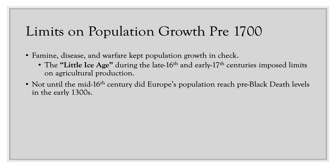Before 1700, natural limits on population growth — specifically famine, disease, and warfare — kept population growth in check, preserving a land-labor balance. The Little Ice Age of the late 16th and early 17th centuries also imposed limits on agricultural production, contributing to famine. It was not until the mid-16th century that Europe's population had recovered from the Black Death of the mid-14th century — about 200 years to recover — and it did not expand much beyond that in the 17th century.